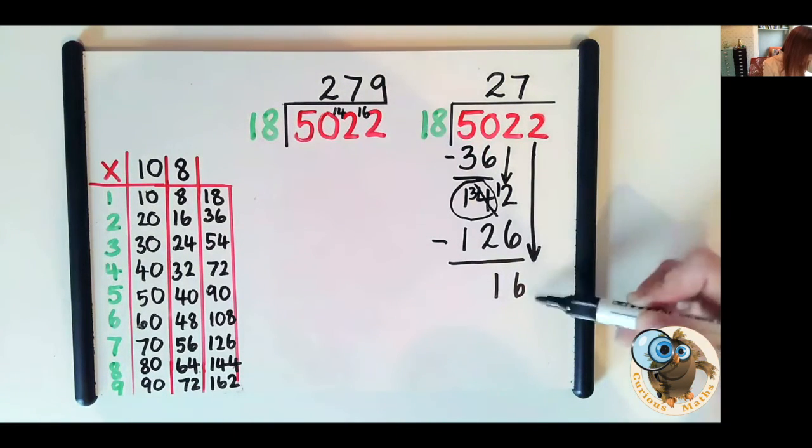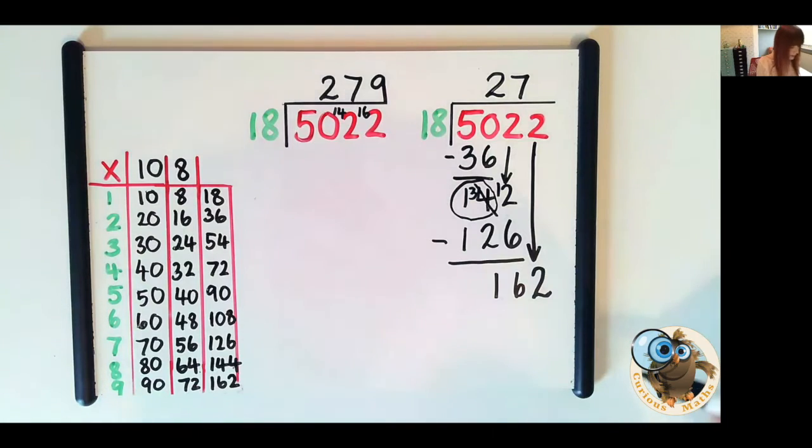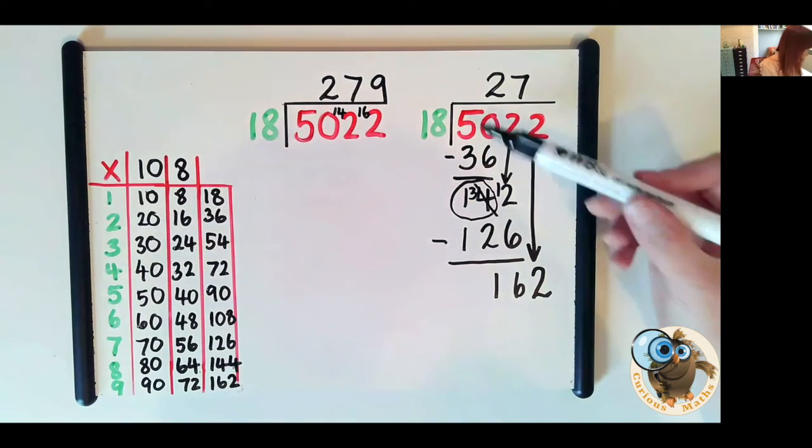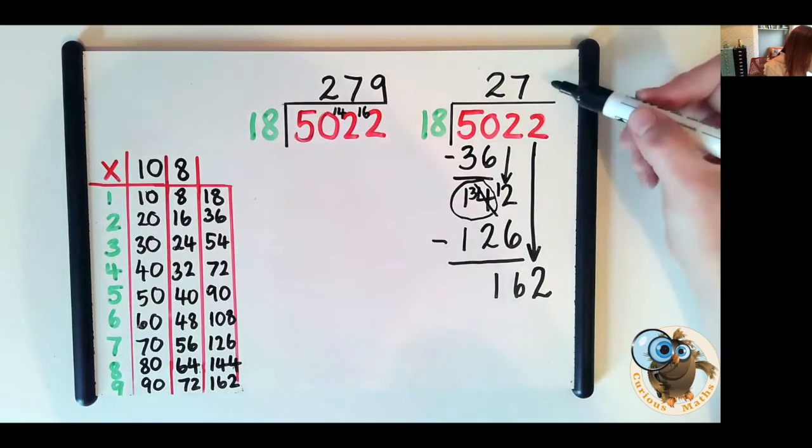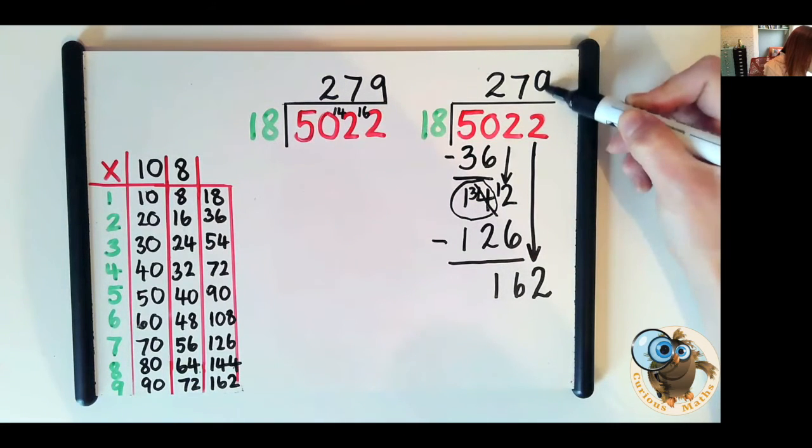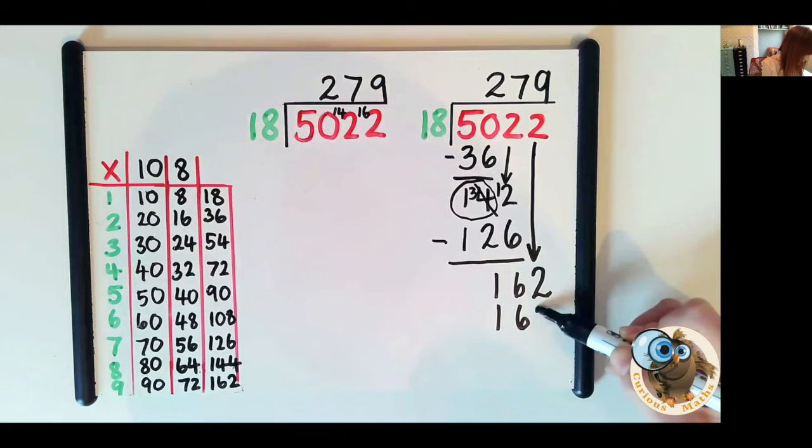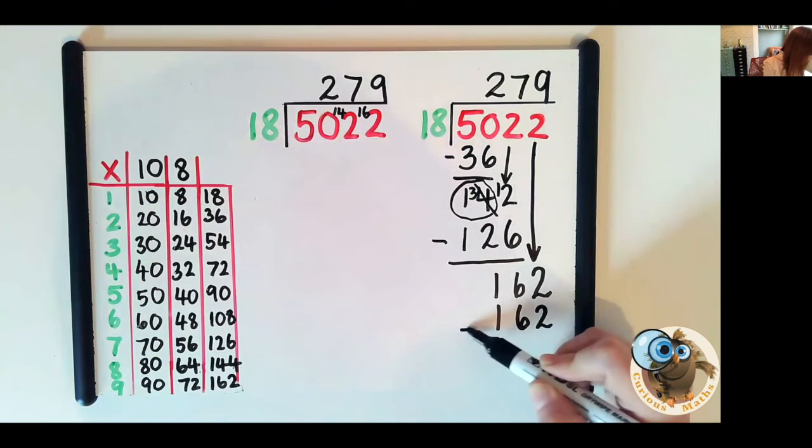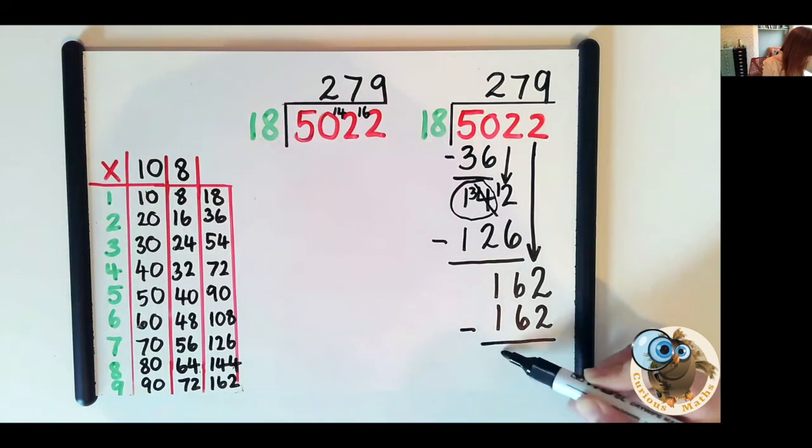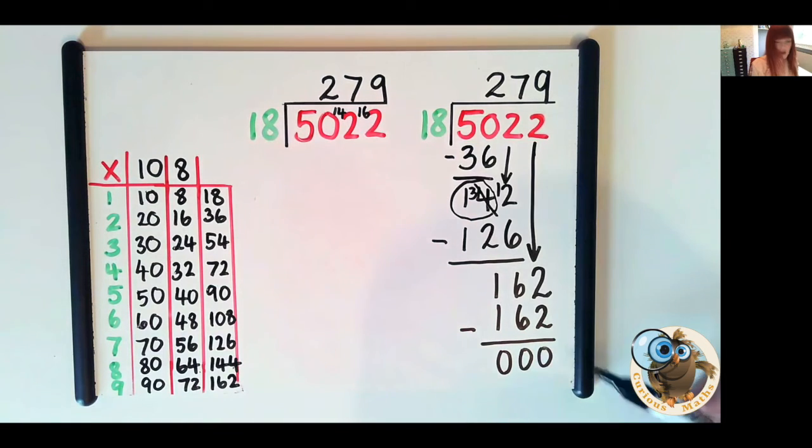We're going to do exactly the same. So now we ask how many 18s are in 162 and we can see from our chart that 9 18s are 162. So we put the digit 9 here. We must remember to put the 162 here for this method because we need to subtract it away. We can see that we have nothing left over.